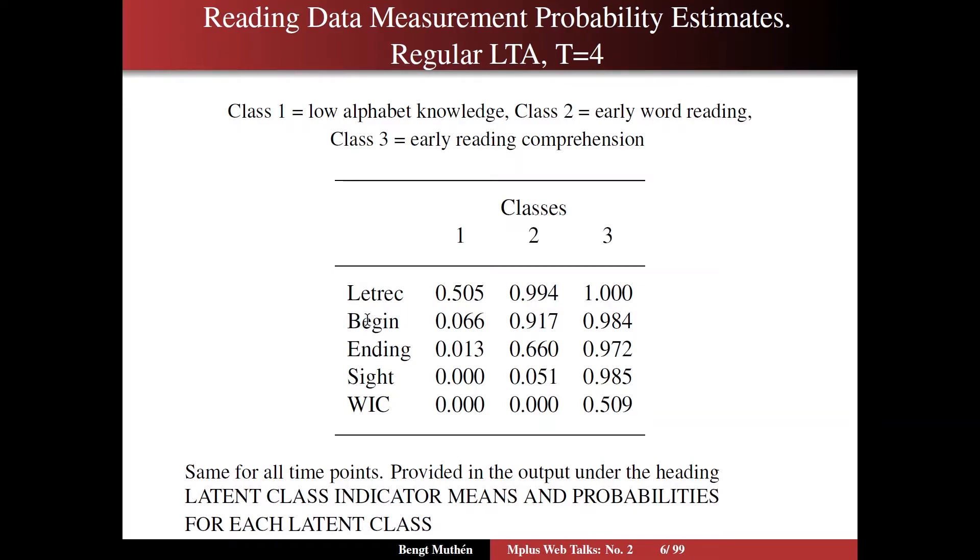Looking at the beginning sounds item, you have a very low probability of getting that right in class one, but a very high probability of getting it right in class two. So that is a good discriminator between being in class one or two. Likewise, ending sounds has an almost zero probability in class one, whereas it is sizable in class two and almost certain in class three. Likewise, sight is a very discriminating item. It does not get sizable until you belong to class number three of early reading comprehension. Then you get the sight word item correct. Those probabilities are held equal across all time points in a baseline type of model, and this output is provided under the heading latent class indicator means and probabilities for each latent class.